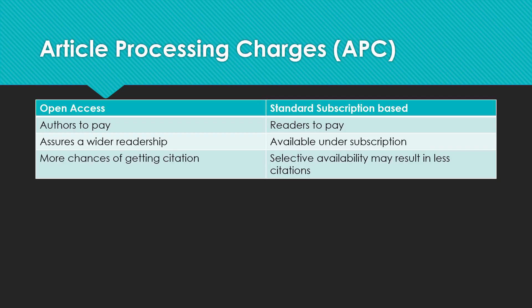Another very important consideration is article processing charges. Broadly, it is categorized into two categories: open access and standard subscription-based. In open access, authors have to pay, while in standard subscription-based journals, readers have to pay. Open access assures a wider readership, while standard subscription-based journals are available under subscription. Open access gives more chances of getting citations because the article is freely available to everyone to read.